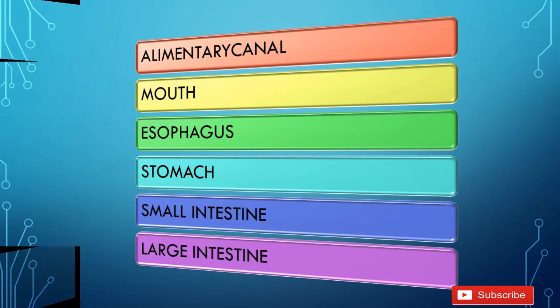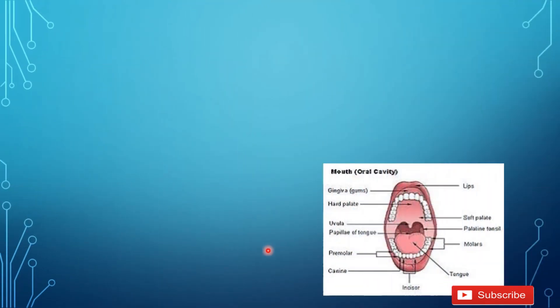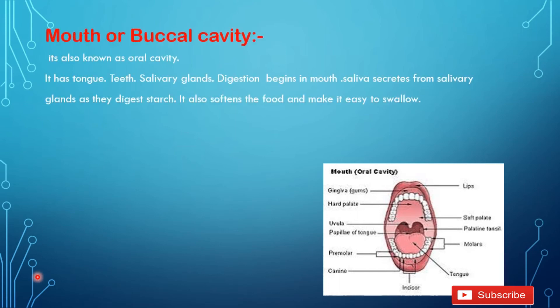The mouth is also called the buccal cavity or oral cavity. It has a tongue, teeth, and salivary glands. Digestion begins in the mouth. Saliva secreted from the salivary glands helps digest starch. It also softens the food and makes it easy to swallow.